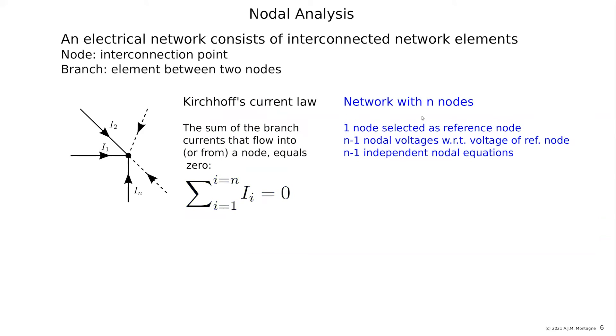For a network with N nodes, which means that we can select one node as a reference node. So this is for example ground, the reference. We know the voltage that is nodal, we just define it. And then we have N minus one nodal voltages with respect to the reference node. And in this way we find N minus one independent nodal equations.